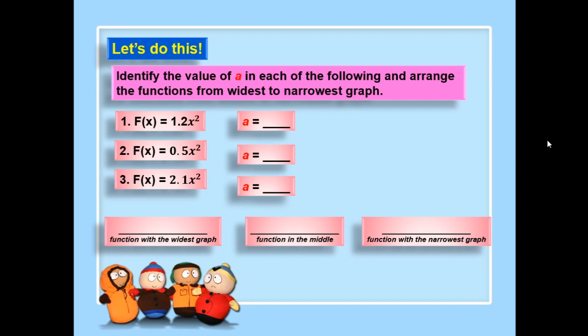Let's have another example. Identify the value of a in each of the following quadratic functions and arrange them from widest to narrowest graph. Number 1 is the quadratic function defined by 1.2x squared. Number 2 is defined by 0.5x squared. Number 3 is defined by 2.1x squared. Determine the values of a and arrange the functions from the widest to the narrowest graph.